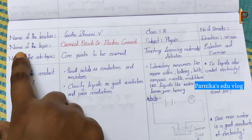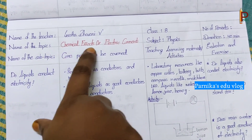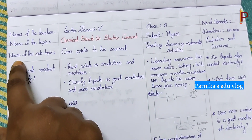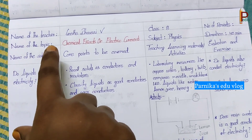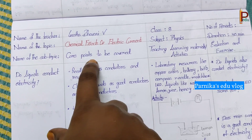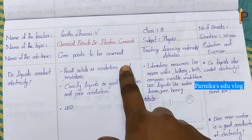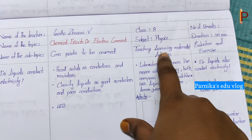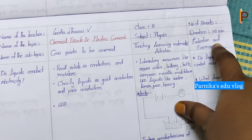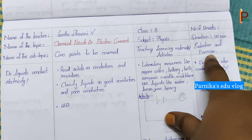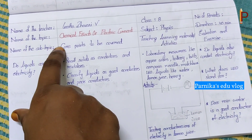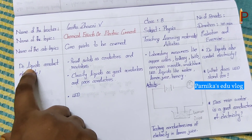Next, name of the topic. The topic name is chemical effects of electric current. Next, name of the subtopic — this is the column to write subtopics. And coming to the next column, that is core points to be covered. Next column is teaching learning materials or activities. Next column is evaluation and exercise. In the first column, that is name of the subtopic, we have to write the subtopic name.